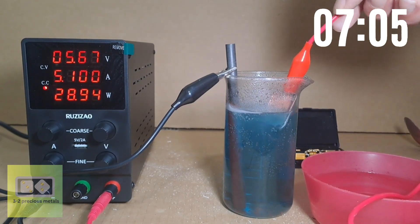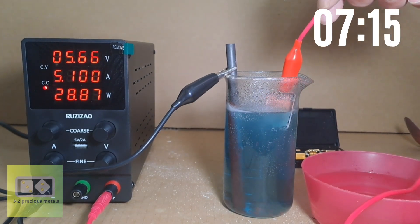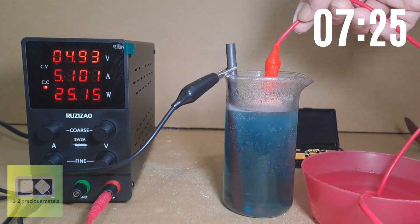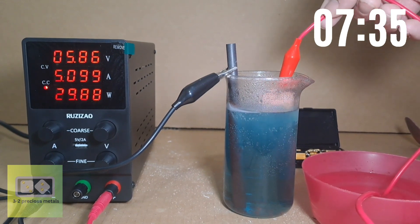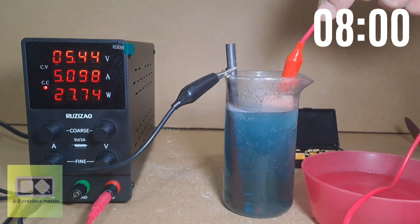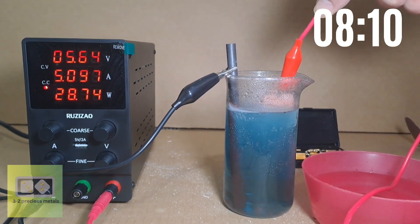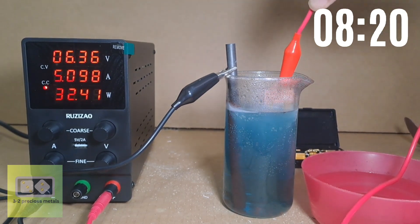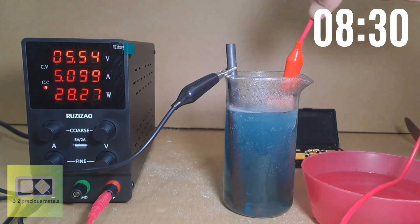As for this experiment, would I consider it a fail? The answer is no. I did manage to remove the gold using a sodium bisulfate electrolyte. Would I use this method again? Probably not. It's very time consuming for the very little gold that would be recovered.